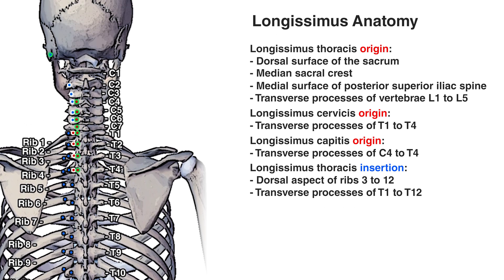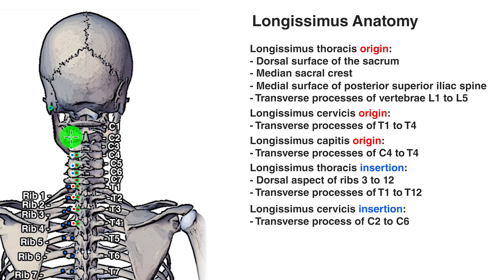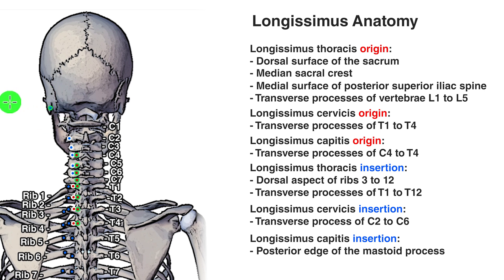As for the cervicis, the insertion points with the white outline connect onto the transverse processes of C2 all the way down to C6. And lastly, the insertion point for the longissimus capitis, shown in blue with a green outline, is on the mastoid process. The mastoid process is easily palpated — feel behind your own ear and move your finger down slightly toward the back of the head, and you'll feel a bony bump. That's the mastoid process.